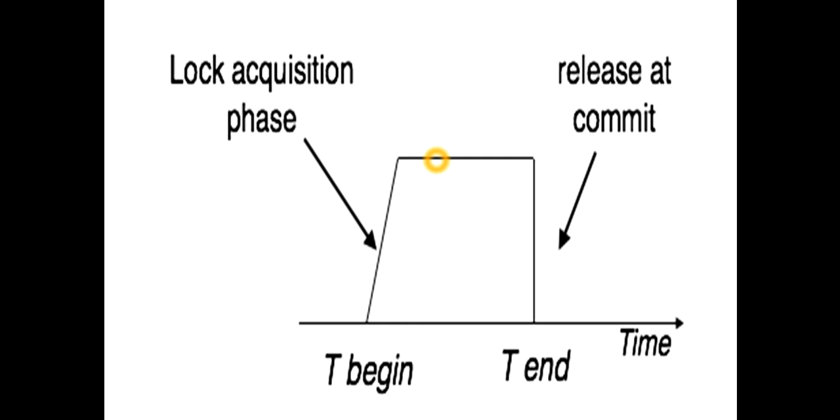But when the execution is complete on the data items, then it is going to release all the locks at commit. As all the locks are released at the same time after commit, this is a vertical line to the horizontal line, and the horizontal is denoting time.